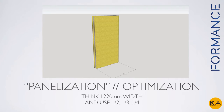This optimization process we call panelization — coming from panels. So thinking about the width of the panel and then using halves and thirds and fourths all around the structure to actually minimize the wastage.